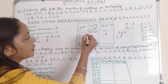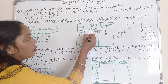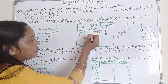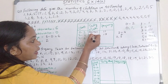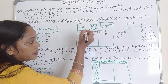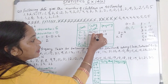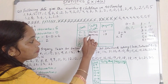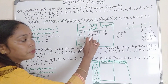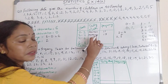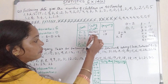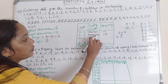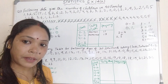Now write the tally marks for 17. We write groups of five: 5, 5, 5 — that gives 15 — then 2 more lines: 16 and 17. So tally marks show 5 plus 5 plus 5 plus 2, which equals 17.